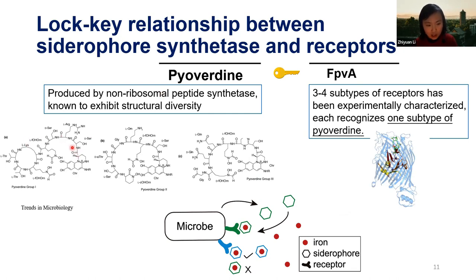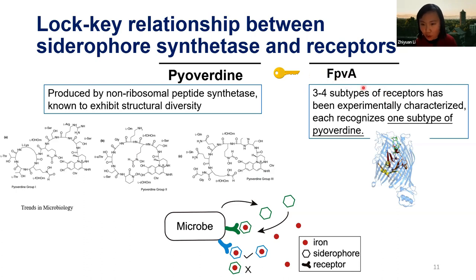There are some known structures — about three subtypes of pyoverdine that are similar in chemical structure with some differences. Each can be recognized by one subtype of FpvA. It is a lock-and-key relationship: one lock can be opened by one key. For example, a green subtype of siderophore can only be taken up by the green subtype receptor, but not the blue subtype — that one cannot be recognized.